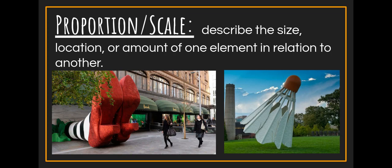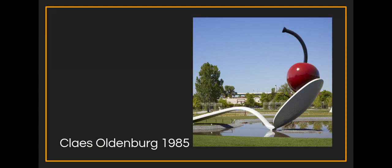A lot of the examples we have here deal with size and how we can play with that to make artwork really interesting. In the two examples below, you have normal everyday objects blown up to crazy proportions to make them interesting — the Wicked Witch of the West's ruby red shoes coming out from underneath a building, huge, and a giant badminton birdie in the middle of a park. Proportion doesn't necessarily mean bigger — it could also be a lot smaller than normal.